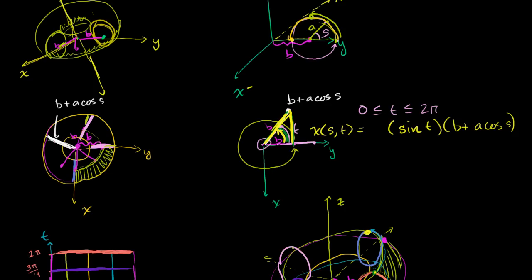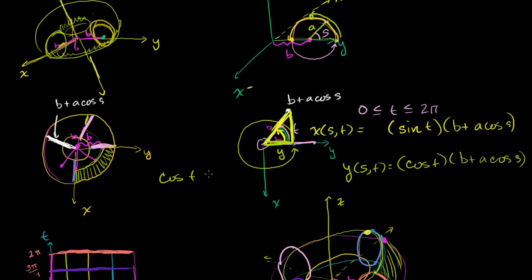And the y-coordinate is going to be the cosine of t times the same radius. So y(s, t) = (b + a·cos(s))·cos(t). Using SOH-CAH-TOA on our triangle: cosine of t equals the adjacent side y over the hypotenuse b + a·cos(s). Multiply both sides and you get y(s, t) = cos(t)·(b + a·cos(s)).